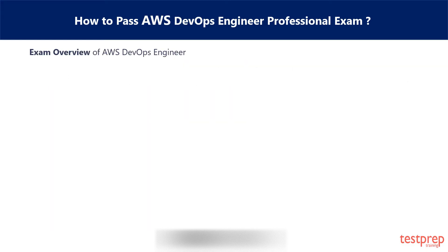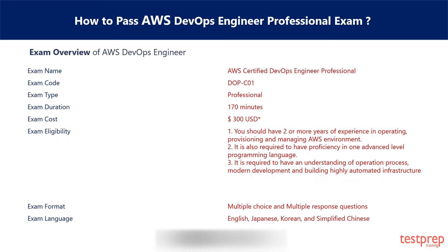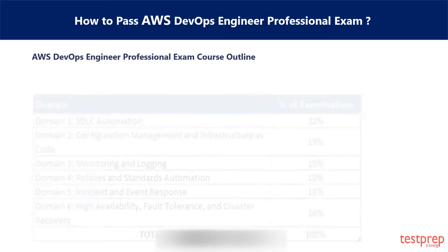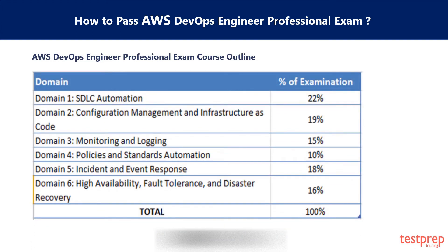Some details you should know before the exam are given in the AWS DevOps Engineer Professional Exam Course Outline. The AWS DevOps Engineer Certification includes six domains with focus on: SDLC Automation, Configuration Management and Infrastructure as Code, Monitoring and Logging, Policies and Standards Automation, Incident and Event Response, and High Availability, Fault Tolerance, and Disaster Recovery.